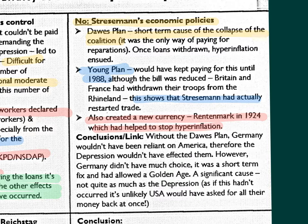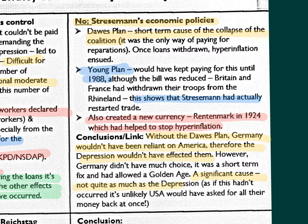Without the Dawes Plan, Germany wouldn't have been reliant on America, and therefore the depression wouldn't have affected them in the same way. However, Germany didn't have much choice — it was a short-term fix that had allowed the Golden Age. Therefore it was a significant cause, though not quite as important as the depression itself, since if the depression hadn't occurred it's unlikely the USA would have asked for their money back all at once.